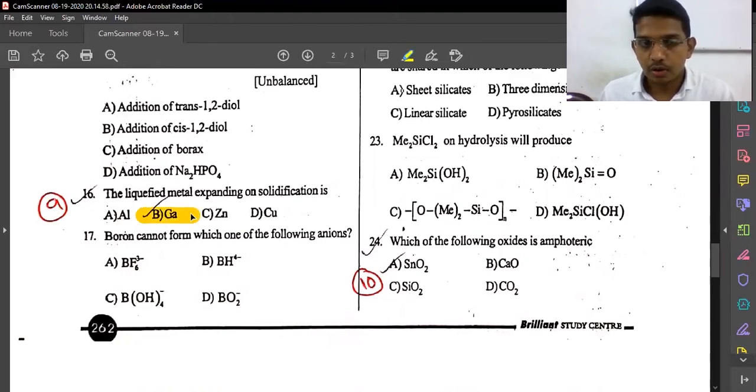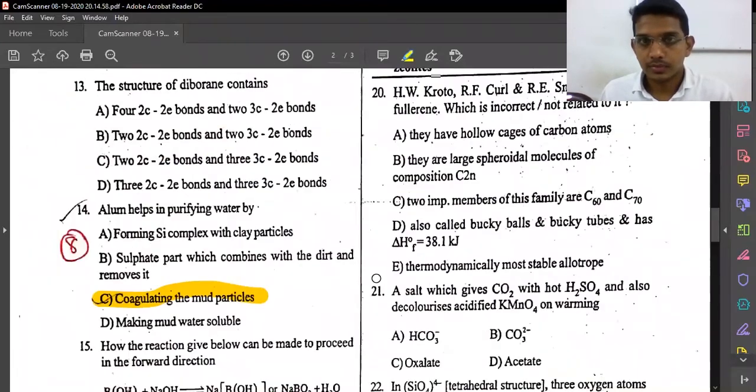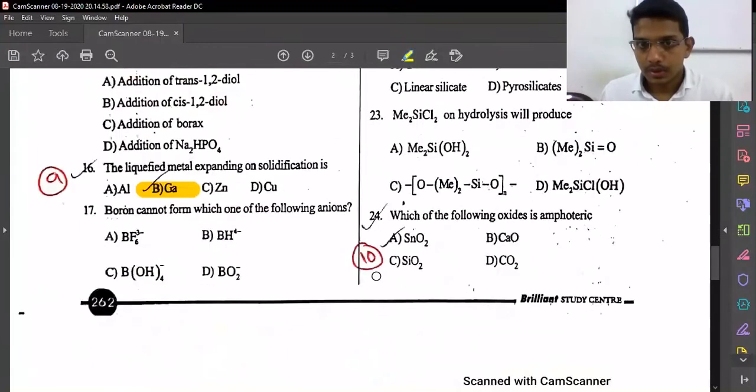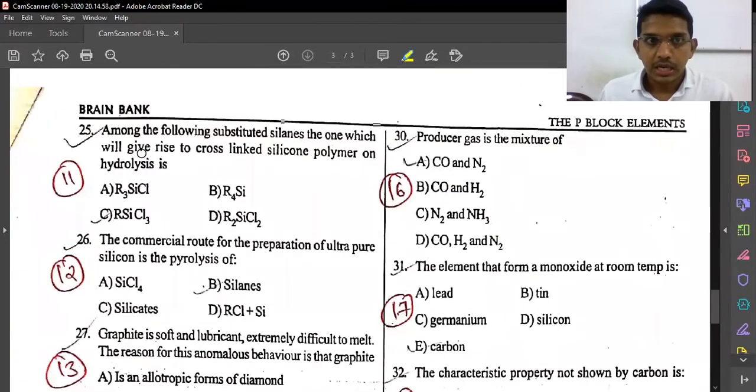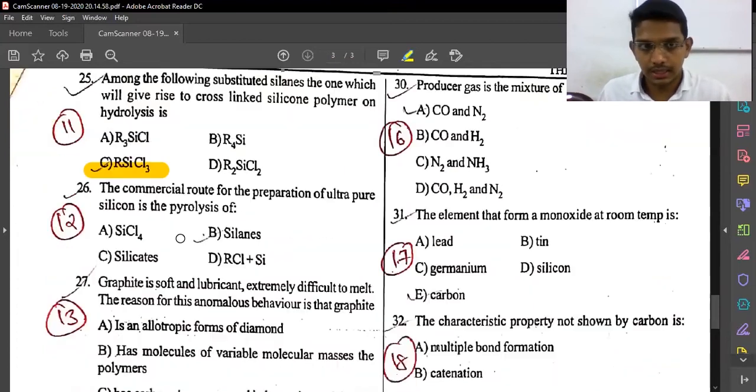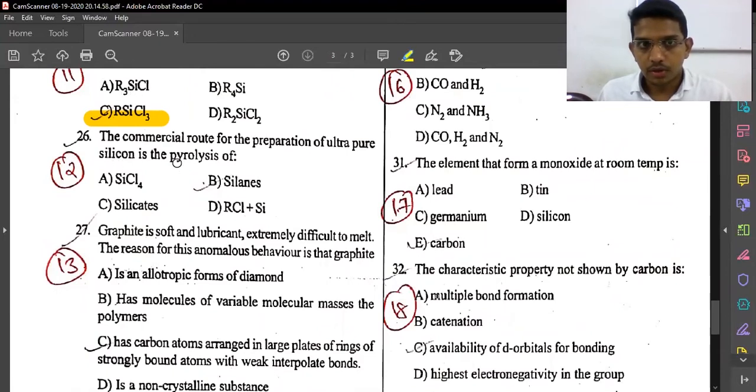Which of the following oxides is amphoteric? SnO₂. Next: which of the following substituted silanes will give rise to cross-linked silicon polymer on hydrolysis? RSiCl₃. The answer is option RSiCl₃. The commercial route for the preparation of ultra-pure silicon is pyrolysis of option B.